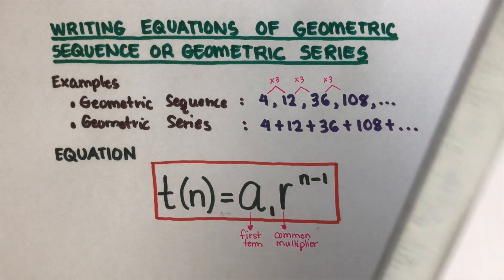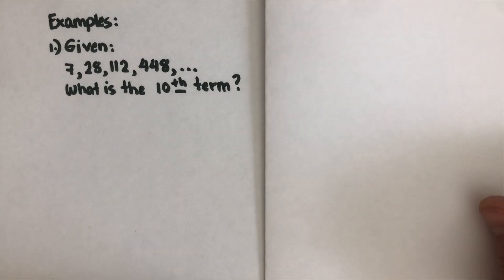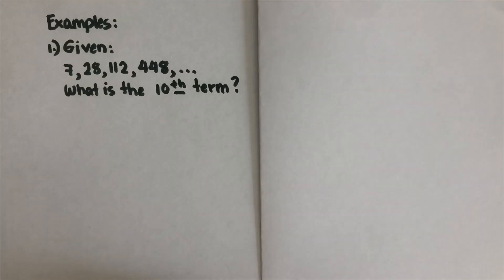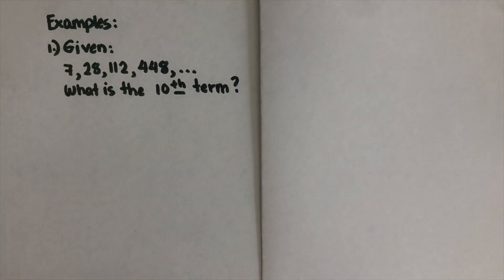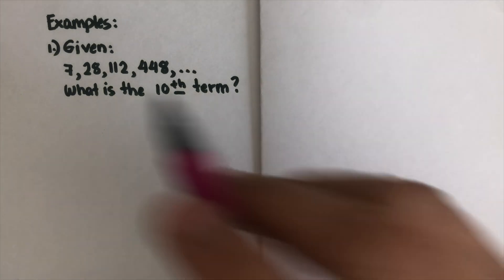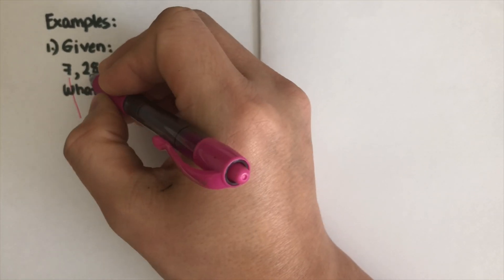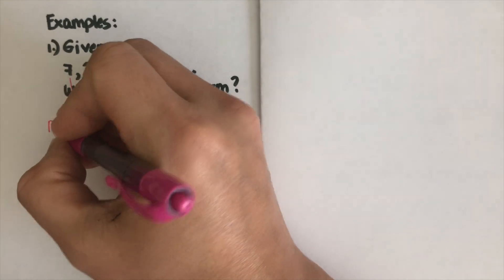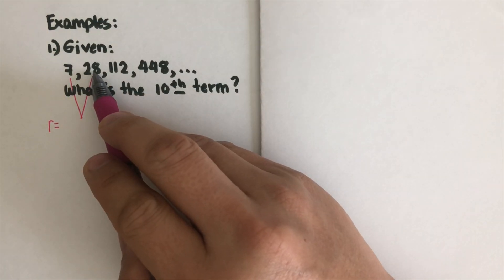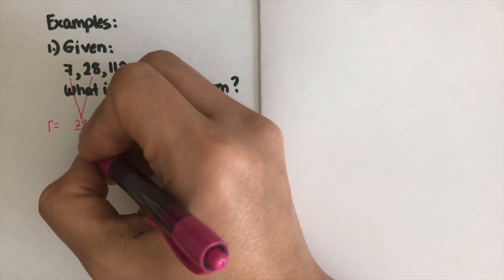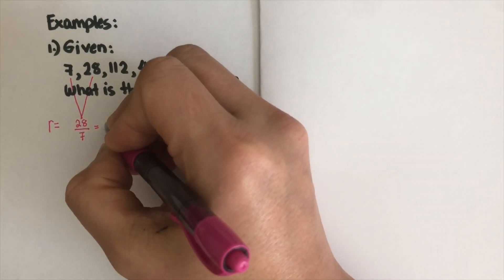Now let's look at an example to see how this formula works. We're given a list of numbers and our task is to find the 10th term. We already know the first term a₁ is 7. To find the ratio r, we divide the second term by the first: 28 divided by 7, so r = 4.